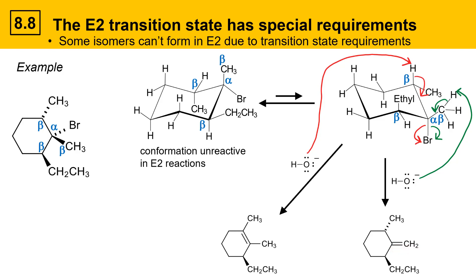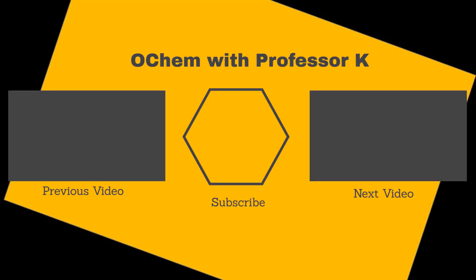Notice there's no possible product with a double bond between the ethyl group and the adjacent carbon. That's because the ethyl group occupies the axial position in this chair conformation, blocking that reactive beta position. These are the two possible alkene products in this reaction. If you found this video useful, check out the next one in the series or watch the prior video, and consider subscribing. My name is Brant Kedrowski — thanks for watching.